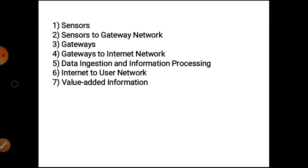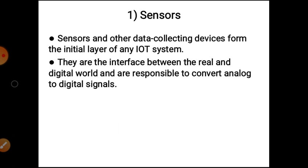Let's discuss all these seven layers one by one. First, sensors. Sensors and other data-collecting devices form the initial layer of any IoT system. These are the interface between the real and digital world, and hence are responsible for converting analog to digital signals. There are different sensory devices such as meters, sensors, probes, gauges, and actuators that can read parameters like temperature, distance, location, and humidity. These devices are installed on endpoints — that is, things — and collect required parameters in the form of raw data.